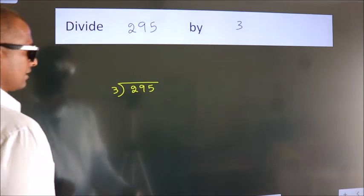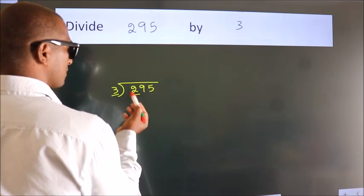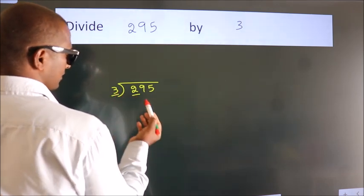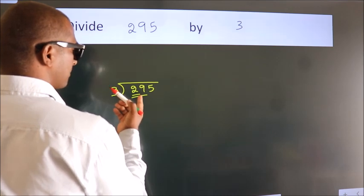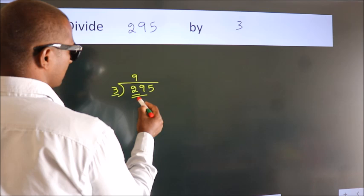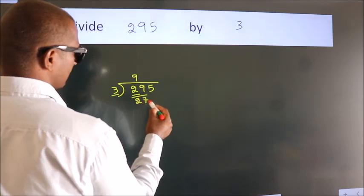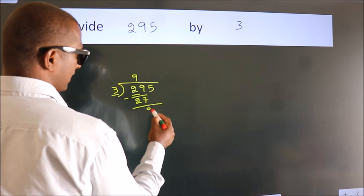Next, here we have 2, here 3. 2 is smaller than 3, so we should take 2 numbers: 29. A number close to 29 in the 3 table is 3 nines, 27. Now we should subtract. We get 2.